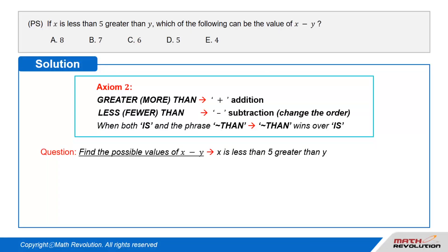Solution. We have to find the possible value of x minus y if x is less than 5 greater than y.